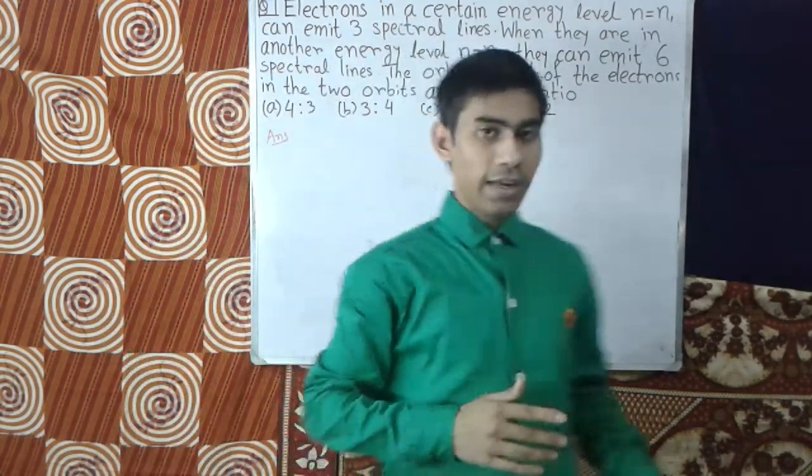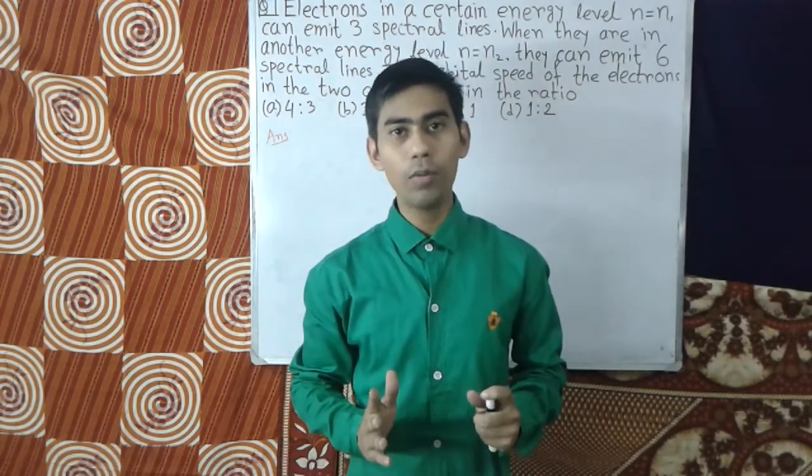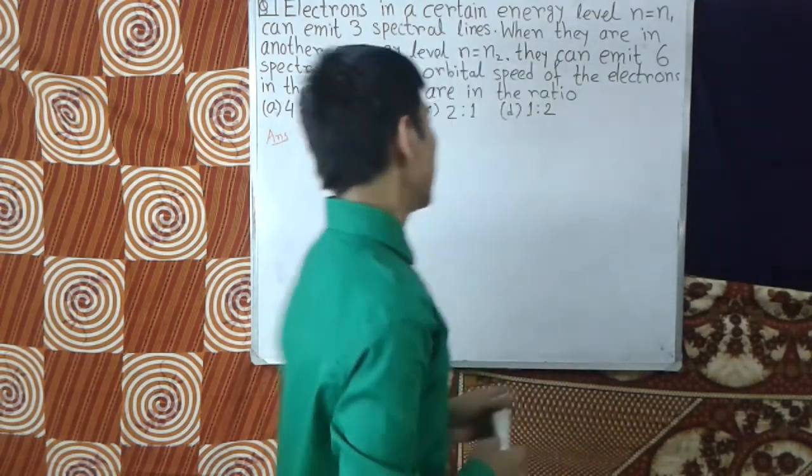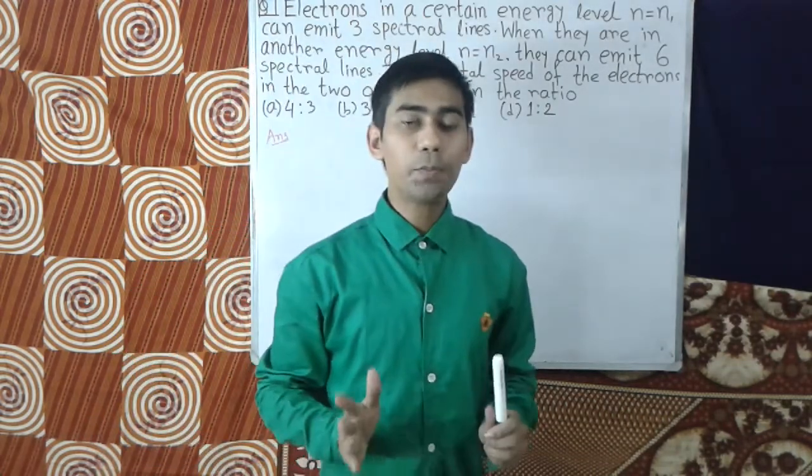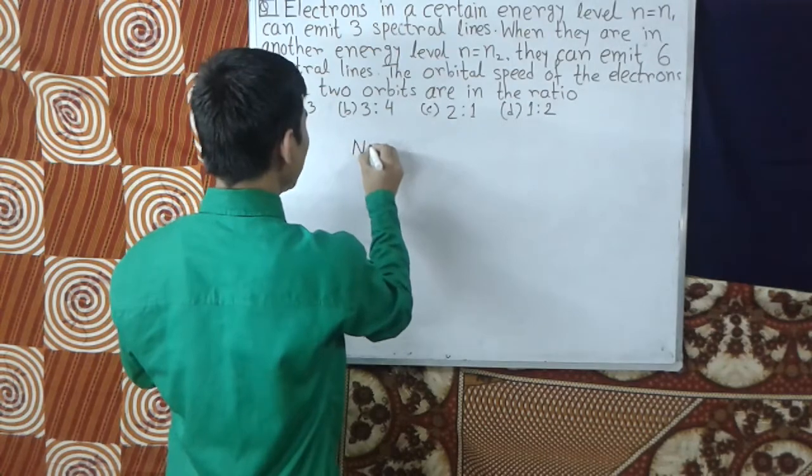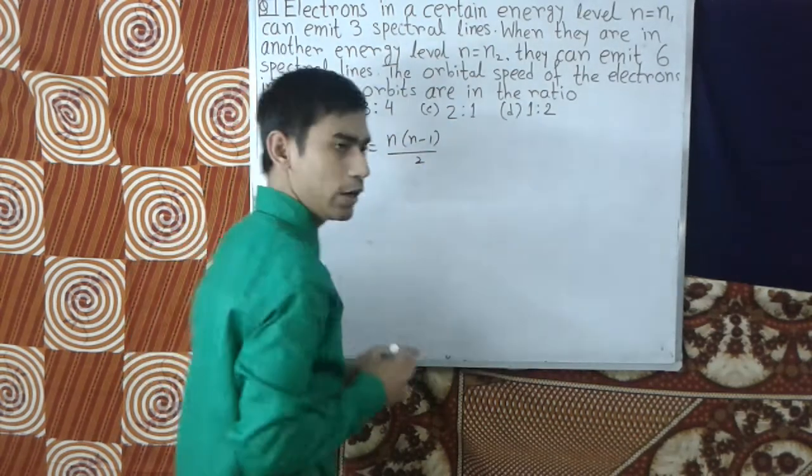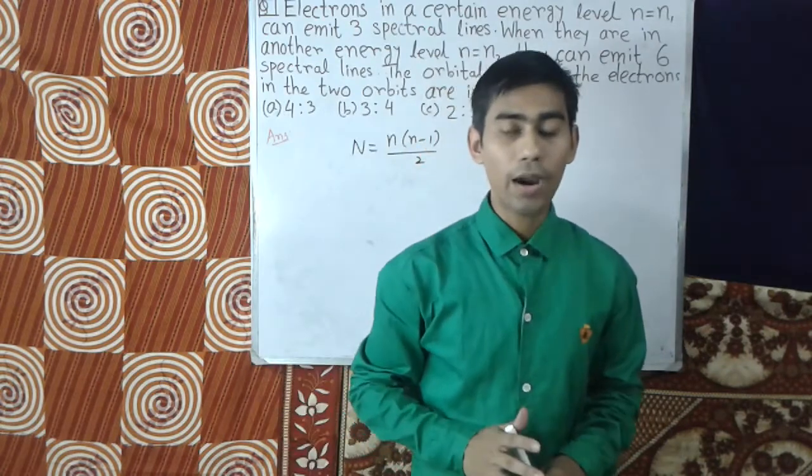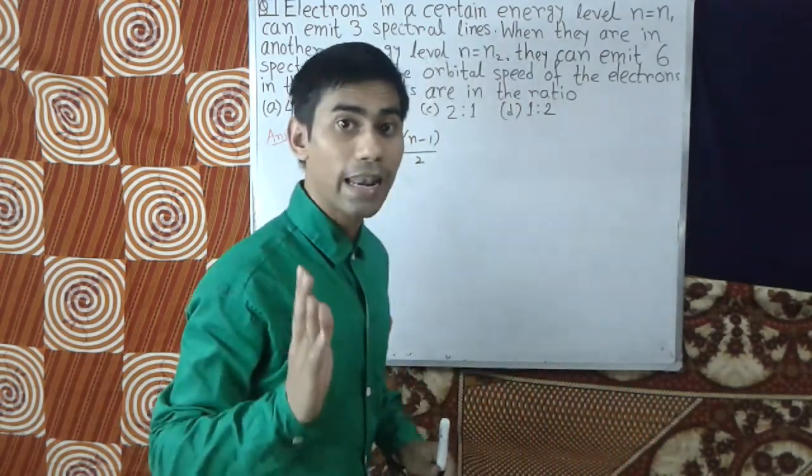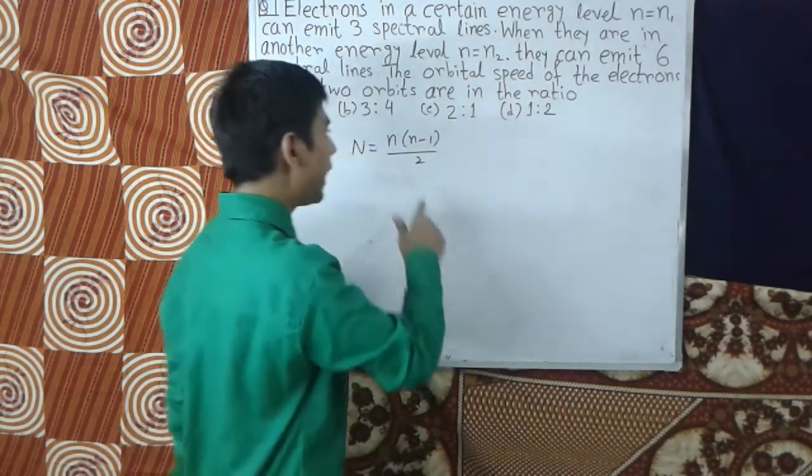Let's go to the trick by which we can solve this problem easily. Now we know that the number of spectral lines is N = n(n-1)/2. This is the formula for total number of spectral lines, where n is the principal quantum number.